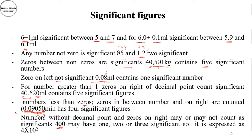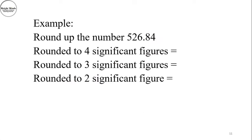For numbers without a decimal point, zeros on the right may or may not be significant — for example, 400 could have one, two, or three significant figures. It can be expressed clearly as 4 × 10² to indicate one significant figure.